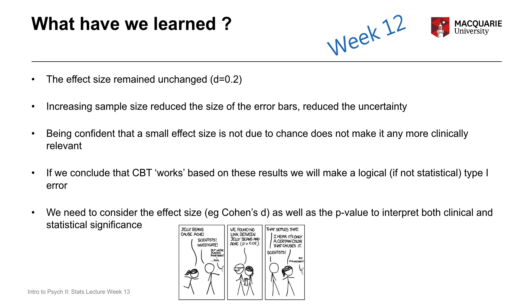In week 12, your guest lecturer Mike talked about the distinction between statistical significance and the size of an effect. He showed how you could have the same size effect — the same difference between groups — but if you change the sample size, you directly change the p-value and statistical significance of the test. It's a really important point: not just focusing on statistical significance, but also looking at the actual size of the effect. Is it an important, meaningful, practically beneficial effect?